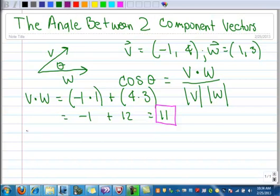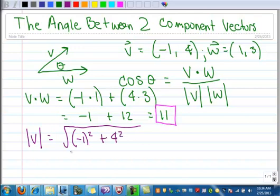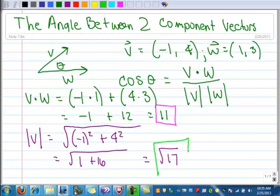Now let's calculate the magnitude of v. The magnitude of v is negative one squared plus four squared. That's one plus 16, which is the square root of 17. Let's box that in so we don't lose that.